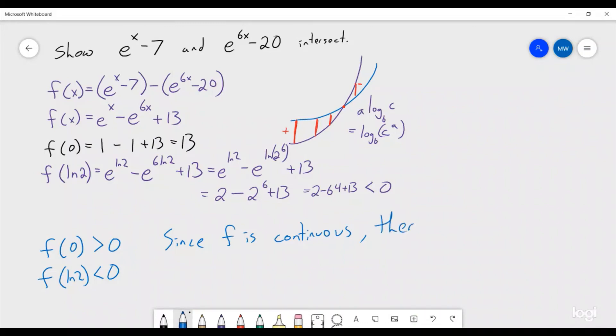So that symbol means there exists, so I'll just write it out. There exists some c such that 0 is less than c is less than the natural log of 2.